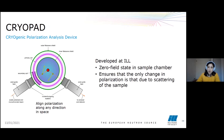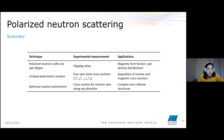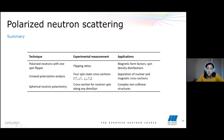To summarize the three techniques discussed today: with the flipping ratio method we derive magnetic form factors and spin density distributions; with uniaxial polarization analysis we measure four spin-state cross sections and separate nuclear and magnetic cross sections; and with spherical neutron polarimetry we can measure the neutron spin cross section along any direction, which is used for more complex magnetic structures.